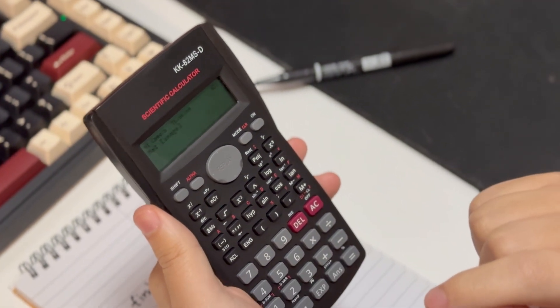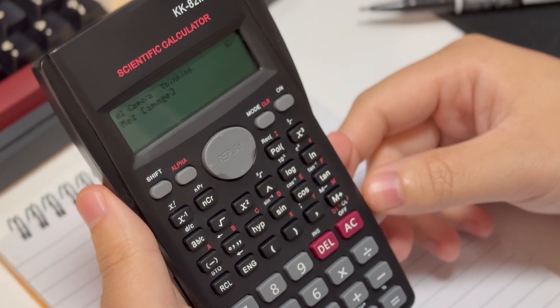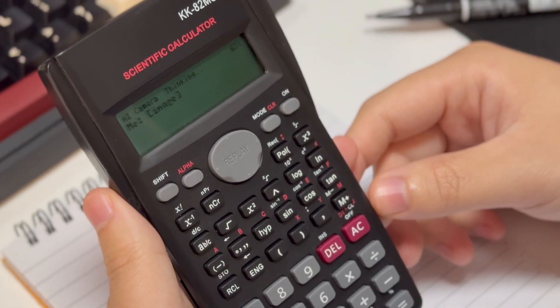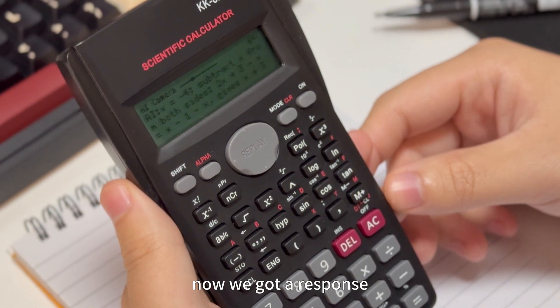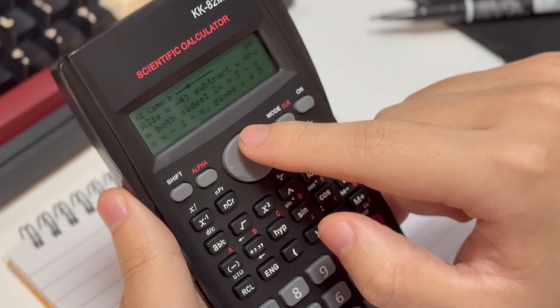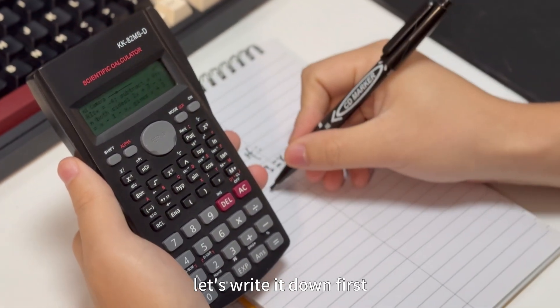Now we got a response. Let's see if AI got it correct. The answer is x equals to minus four. Let's write it down first.